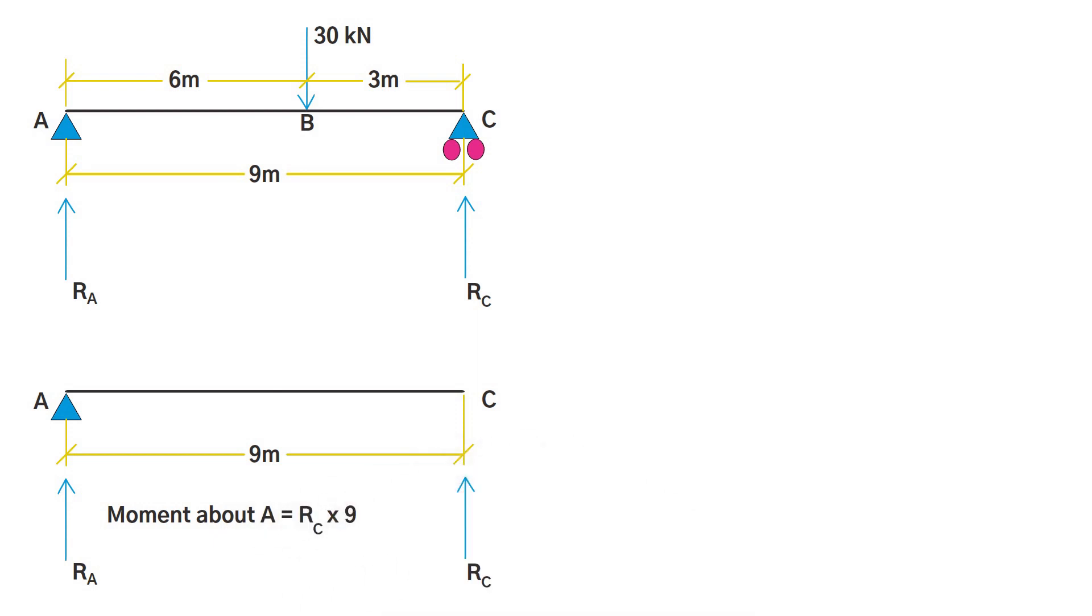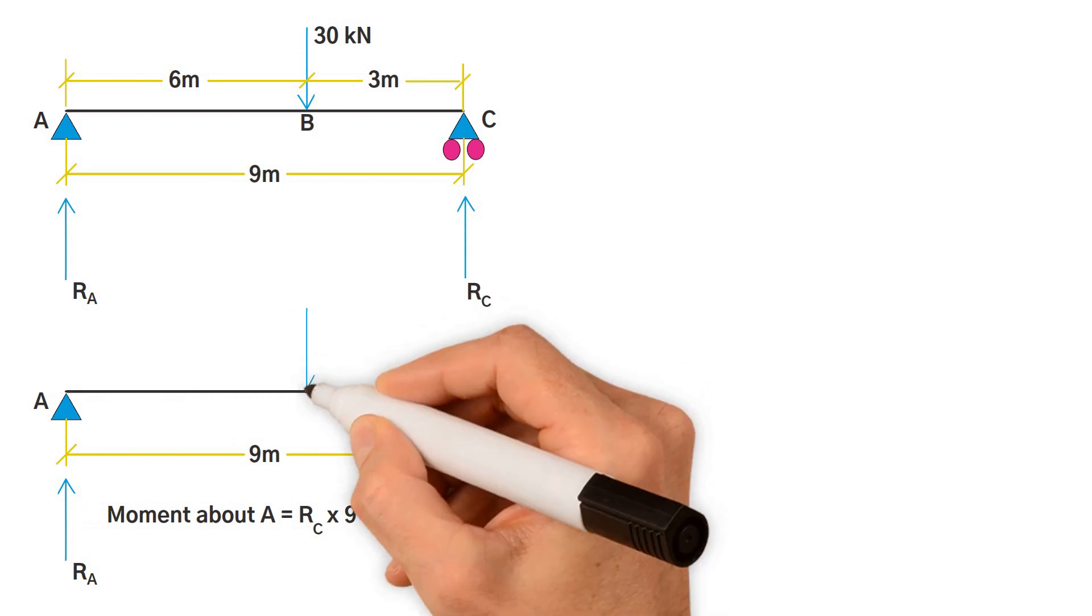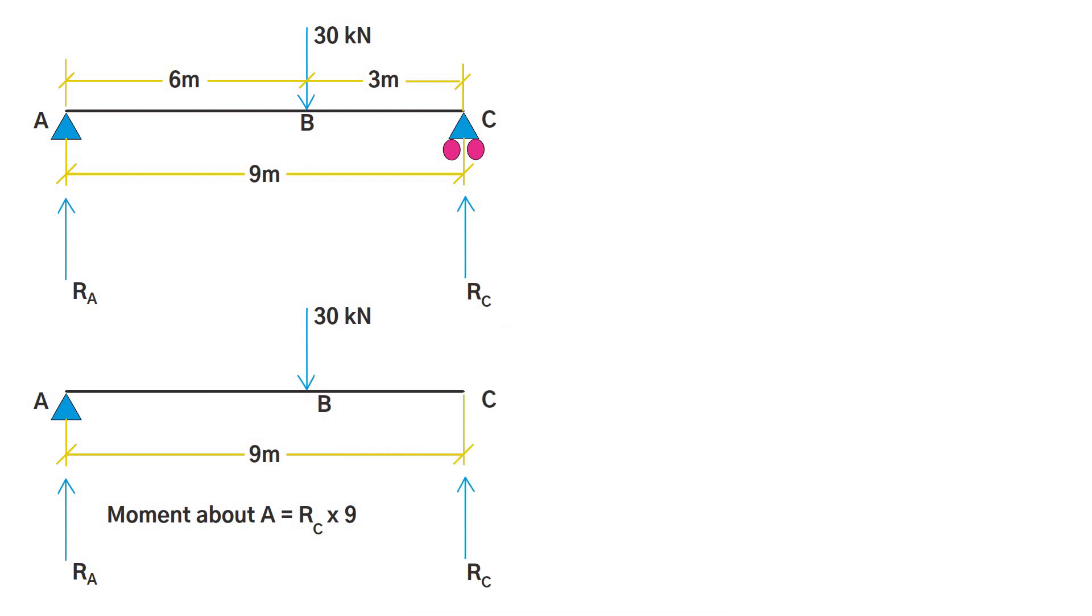R_C is causing an anti-clockwise moment, as you can see it would try to rotate the beam in this direction anti-clockwise. And then we have a 30 kN force acting at B, which is causing a clockwise moment. It would try to rotate the beam about A in this direction. So we can write 9 R_C is equal to 30 times the lever arm, 6 meters. Therefore, R_C is equal to 30 times 6 divided by 9, which equals 20 kN.